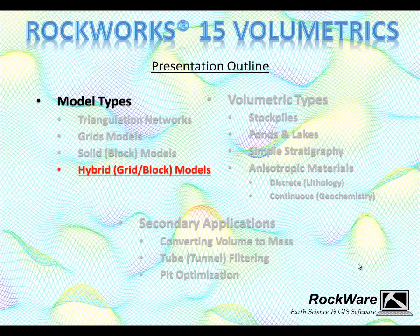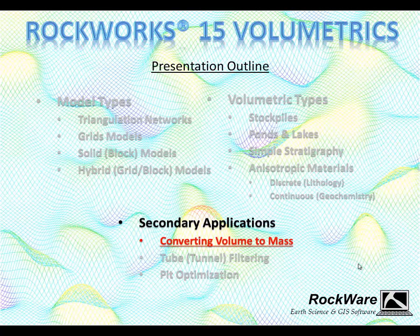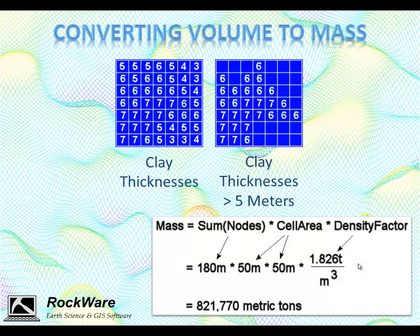Now we move to the concept of hybrid models — models that use two or more of the aforementioned techniques. In this example, the overburden and bedrock were modeled with grid-based methods, while the calcium carbonate percentages use block modeling. Converting volumetrics to mass is a simple process: we start by removing concentrations or thickness values we're not interested in using a high or low-pass filter, then multiply the cell volume by a density factor, sum everything, and we have the mass. This process becomes more complex if the density is spatially variable — in that case, you'll need to create a separate density model and use that during the volume-to-mass process.